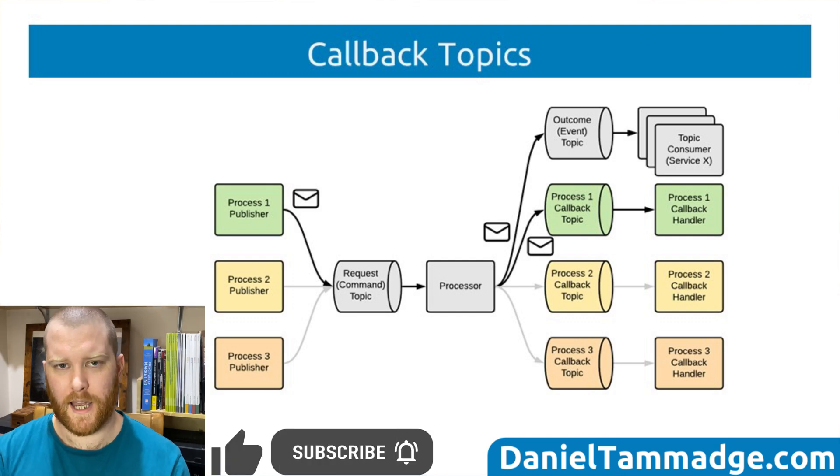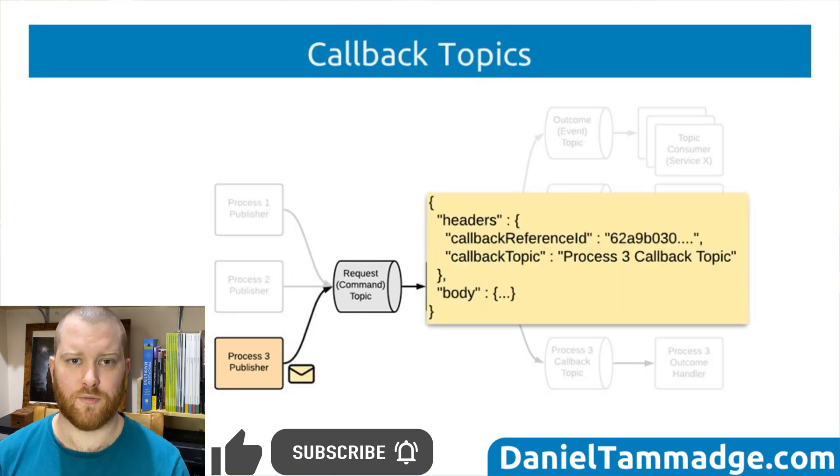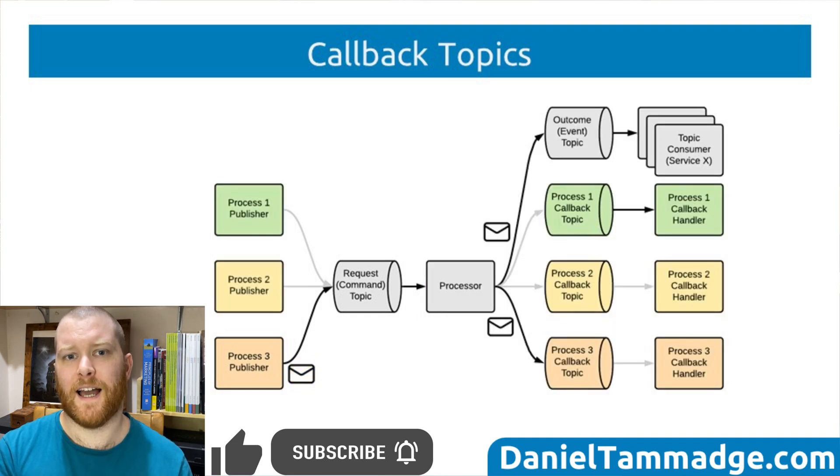And that's how you can implement callback topics. And if you were publishing from, let's say, processor three, the callback topic would indicate it's callback three. And then the processor would then publish it to callback three.